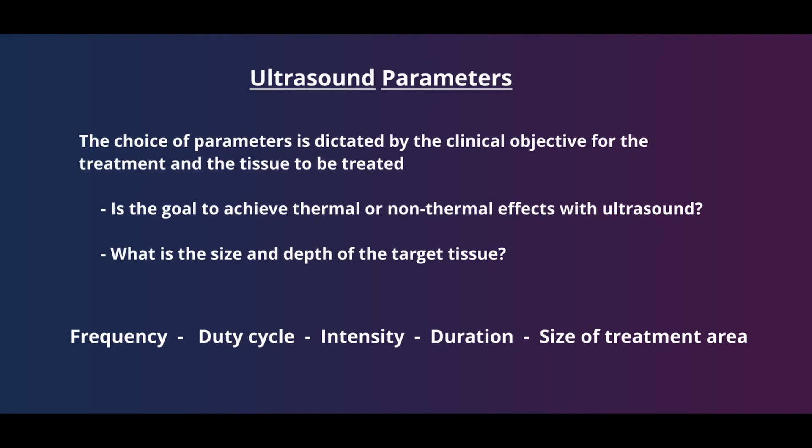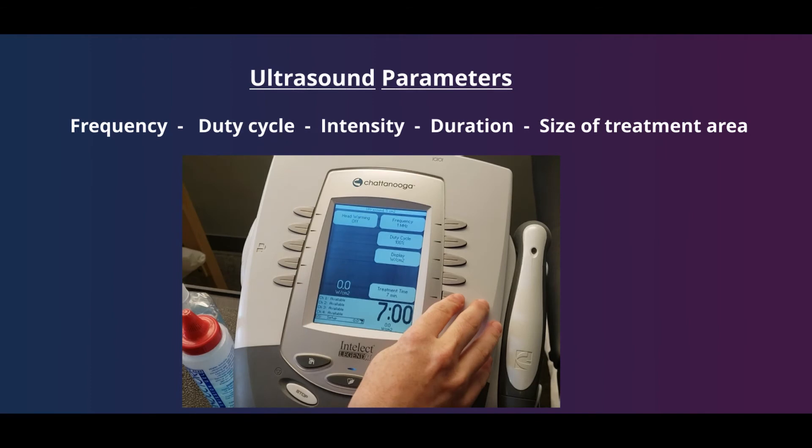Now let's take a look at the different ultrasound parameters that need to be determined before treatment. The control unit of the ultrasound allows us to modify a variety of different parameters. Which parameters are chosen are determined by the size and depth of the target tissue and your clinical goals, which are often dictated by which stage of the healing process the patient is in. The parameters we have control over include frequency, duty cycle, intensity, duration of the treatment, and the size of our treatment area.